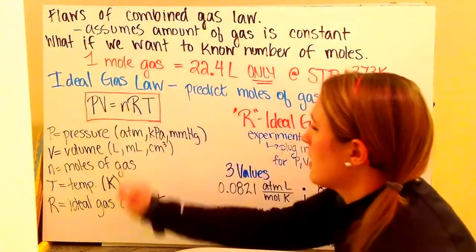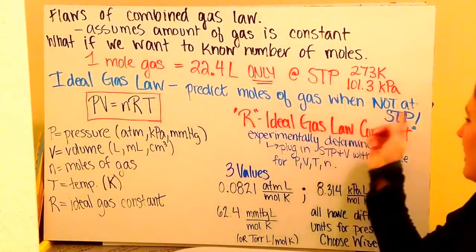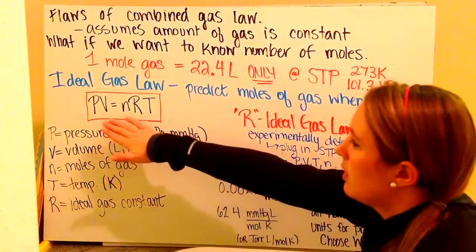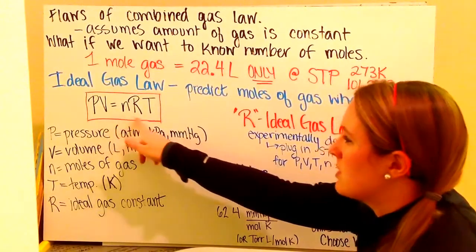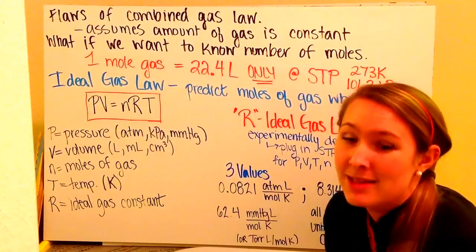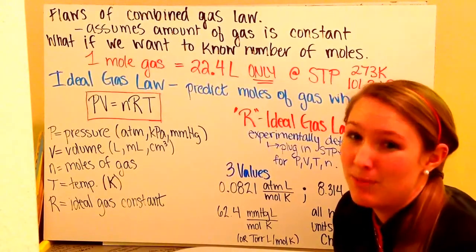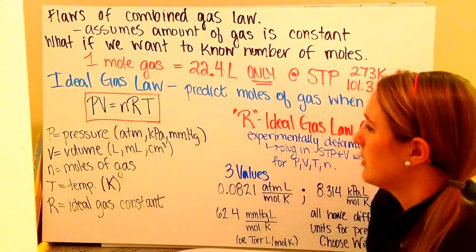So my ideal gas law comes in, and this is where I can predict the moles of the gas when I'm not at standard temperature and pressure. My equation for the ideal gas law is PV equals nRT, known lovingly as PIVNRT, and that is how you remember your ideal gas law.